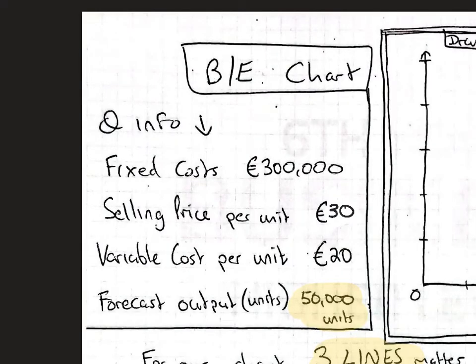I'm going to start with the total revenue line. The total revenue line comes from our selling price per unit — we're going to sell them for €30 each. We want to figure out: if we sold 50,000 units at our target output, how much revenue would we get in? We'd be getting €30 for each of the 50,000 units, so we multiply those together to find it.